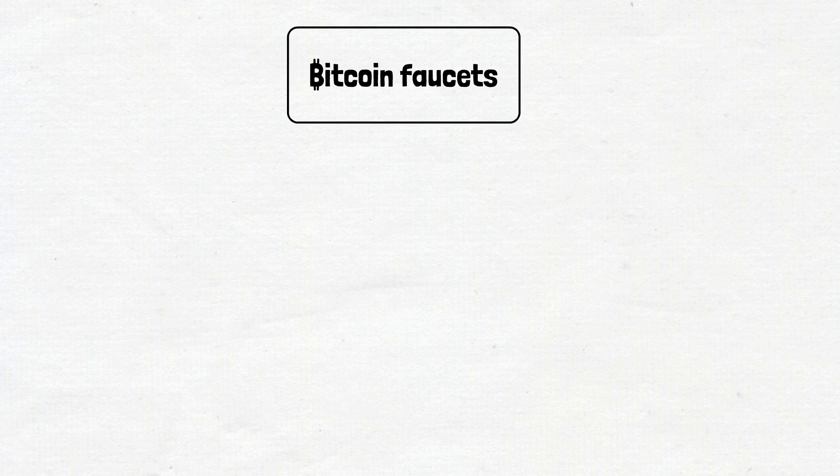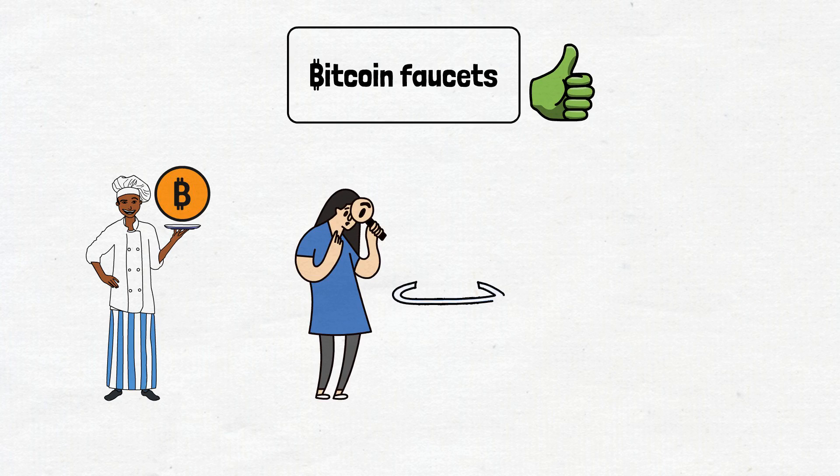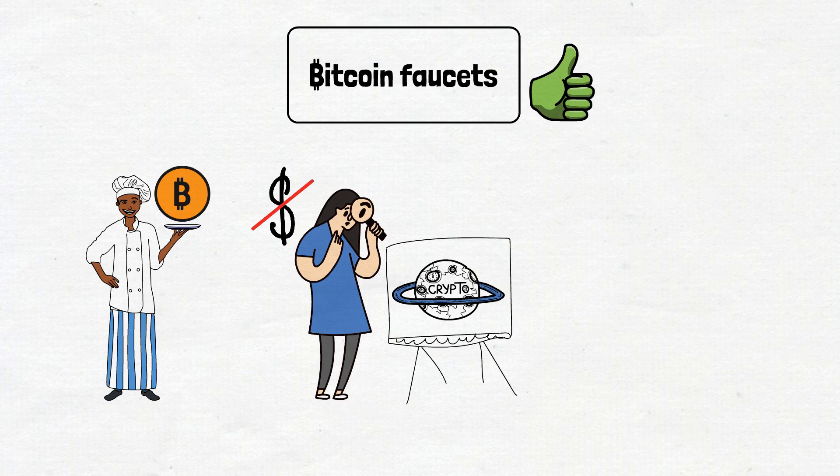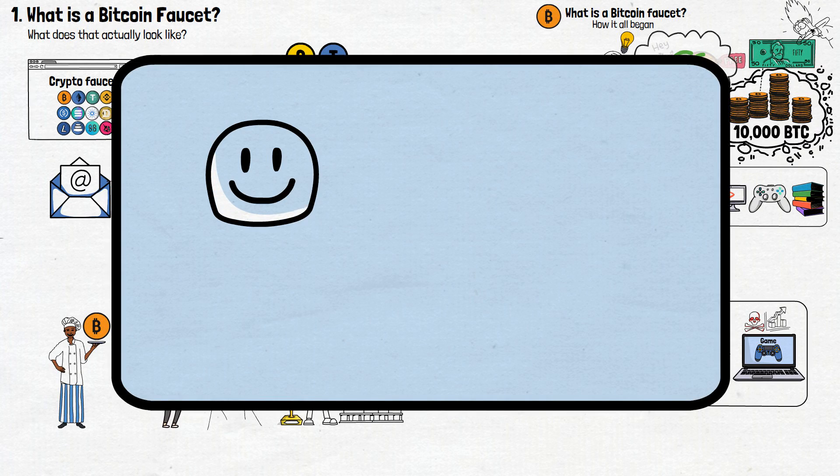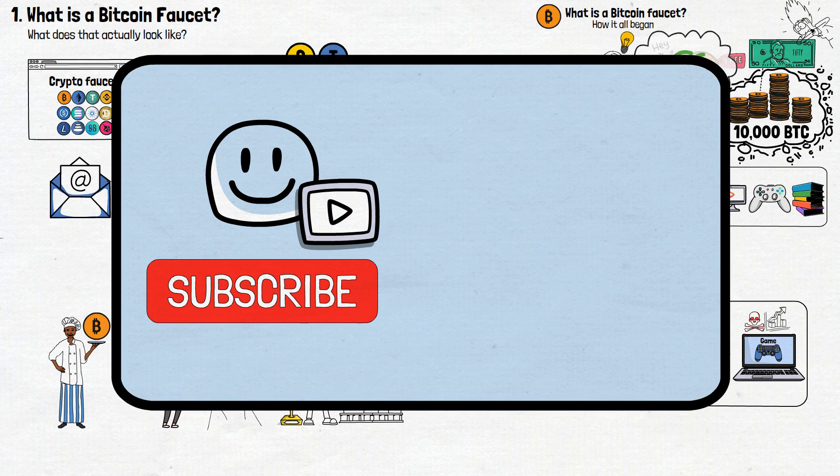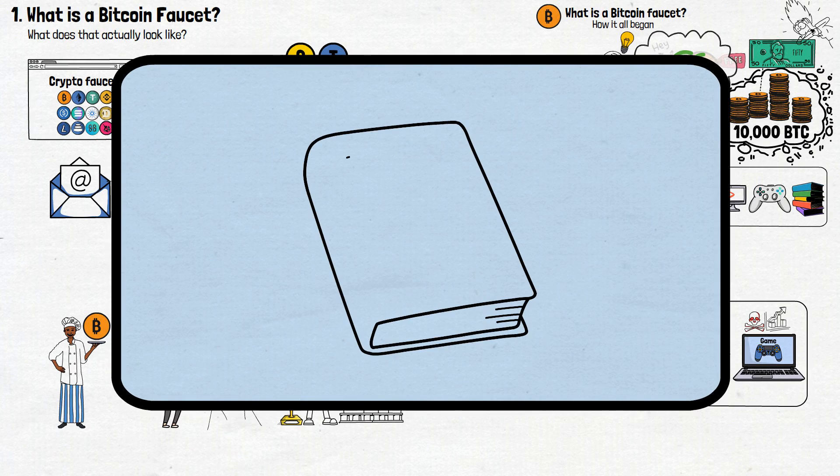So, in a nutshell, Bitcoin faucets exist to give you a taste of Bitcoin ownership. They're a fun way for newbies to dip their toes into the crypto world without spending any real money, and the rewards they offer can be stacked over time. Are you enjoying the video so far? If so, be sure to subscribe to my channel and turn notifications on. That motivates me to continue creating animated educational crypto explainers. Well, now that you got the basics of what is a Bitcoin faucet, let's unravel the magic behind how these faucets actually work.